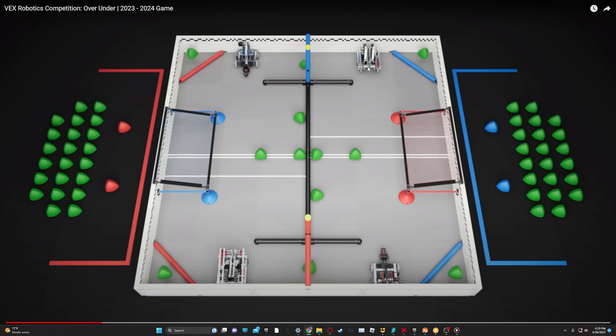I think a good use of the autonomous period would be to get some of the acorns from your side and push them under your goal, just to get them out of the way, you have some more, you don't have to worry about them later on.